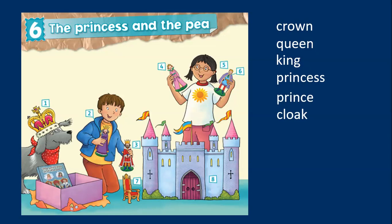In picture number 7, we can see a throne — podemos ver un trono. Y en la imagen number 8, we can see a castle — estos personajes viven en un castillo. Castle means castillo. Vamos a repasar las palabras — you are going to mention these words after me: Number 1, crown. Number 2, queen. Number 3, king. Number 4, princess. Number 5, prince. Number 6, cloak. Number 7, throne. And number 8, castle.